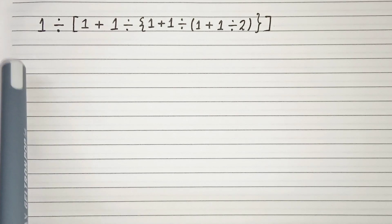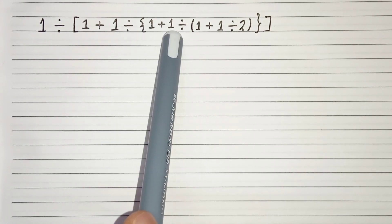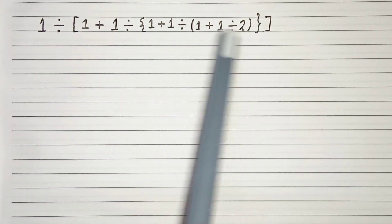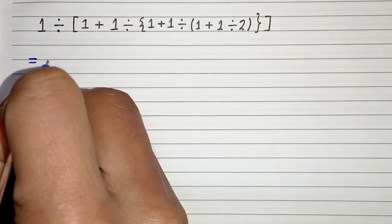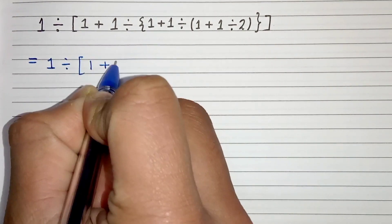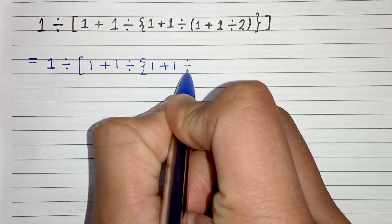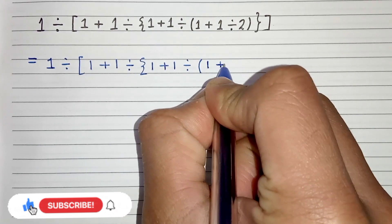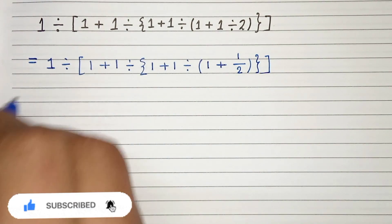Hello everyone. In this video we have 1 divided by bracket 1 plus 1 divided by bracket 1 plus 1 divided by 1 plus 1 divided by 2. We have to evaluate this. Let's start. First of all we have to evaluate the innermost bracket term: 1 plus 1 divided by bracket 1 plus 1 divided by 1 plus 1 divided by 2.